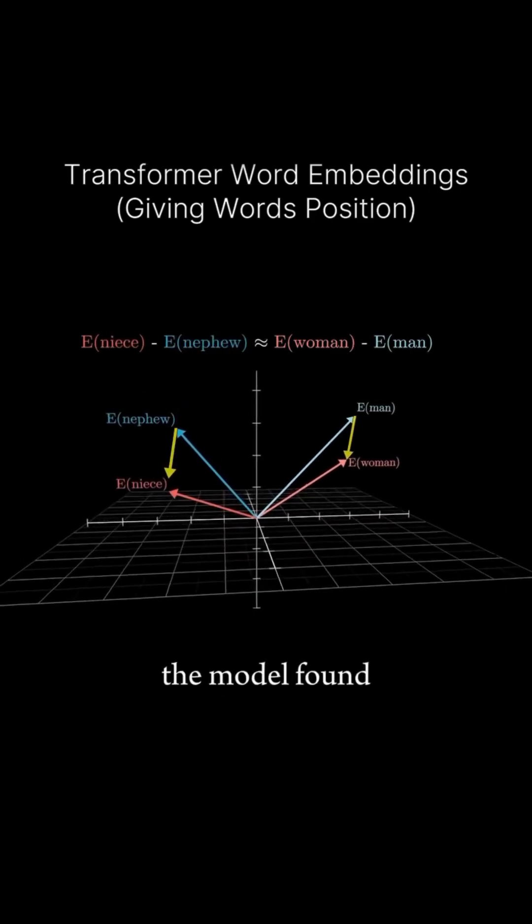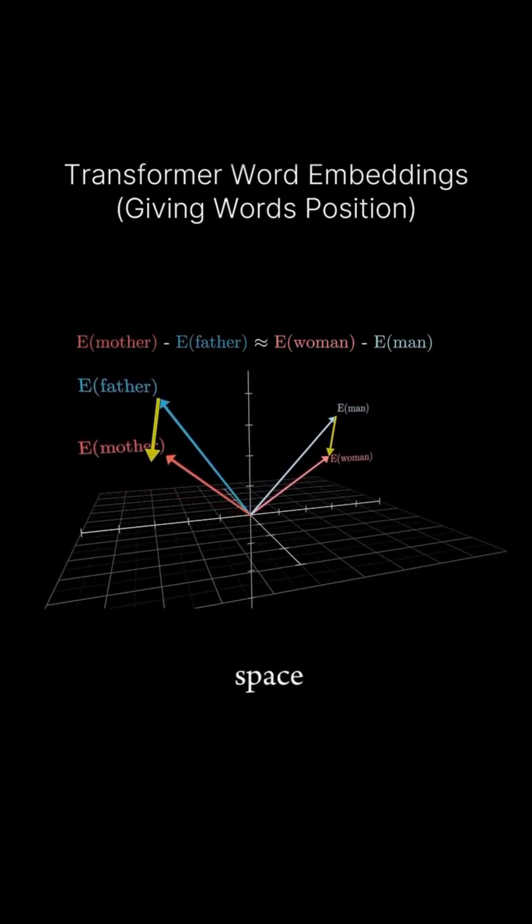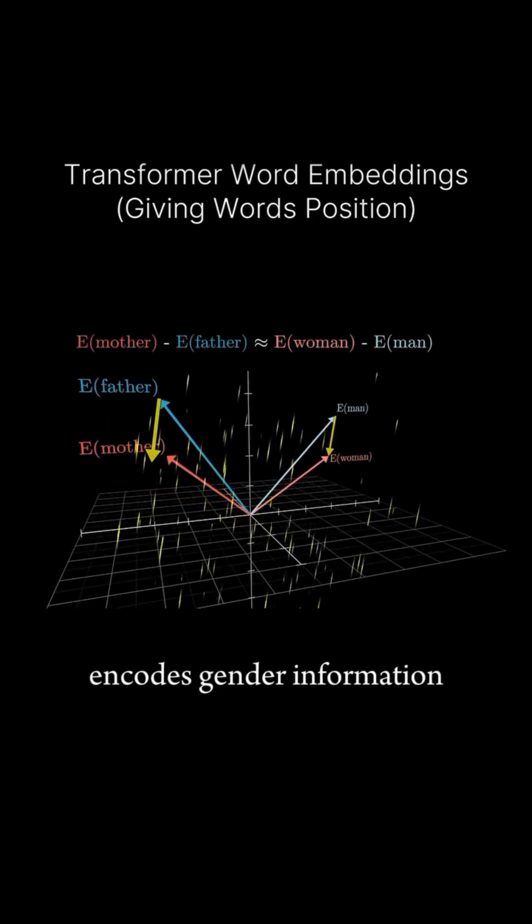It looks like during training the model found it advantageous to choose embeddings such that one direction in this space encodes gender information.